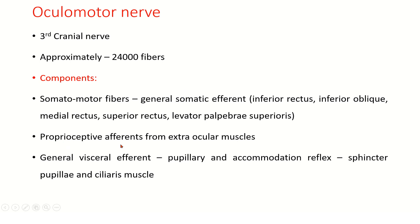There are also proprioceptive afferents from these extraocular muscles. There is also a general visceral efferent component for the pupillary and accommodation reflex, supplying the sphincter pupillae and ciliaris muscle.